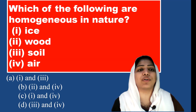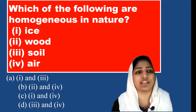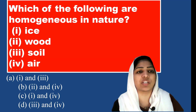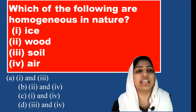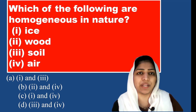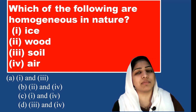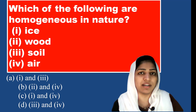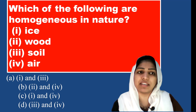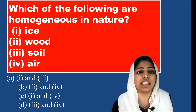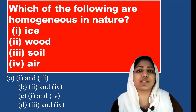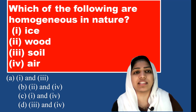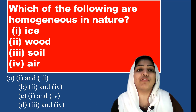Which of the following are homogeneous in nature? Options: ice, wood, soil, air. Ice is a solid state — ice is definitely homogeneous. It is solidified water. Ice is a homogeneous mixture.